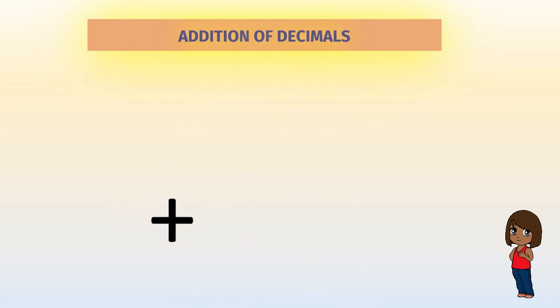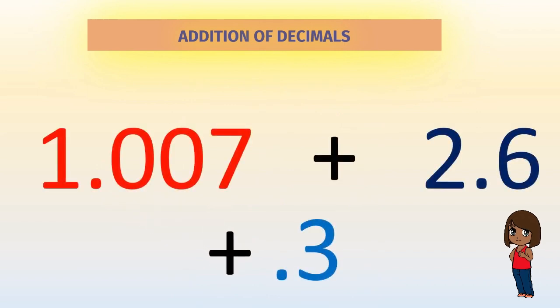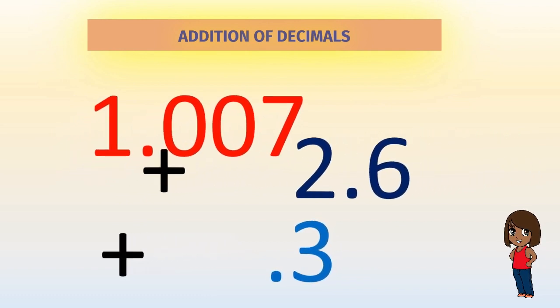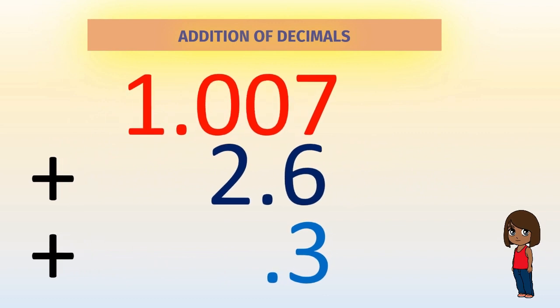Let's take another addition question. We have to add 1.007, 2.6, and 0.3. Is the addition written the right way? No, it isn't. Can you say why?